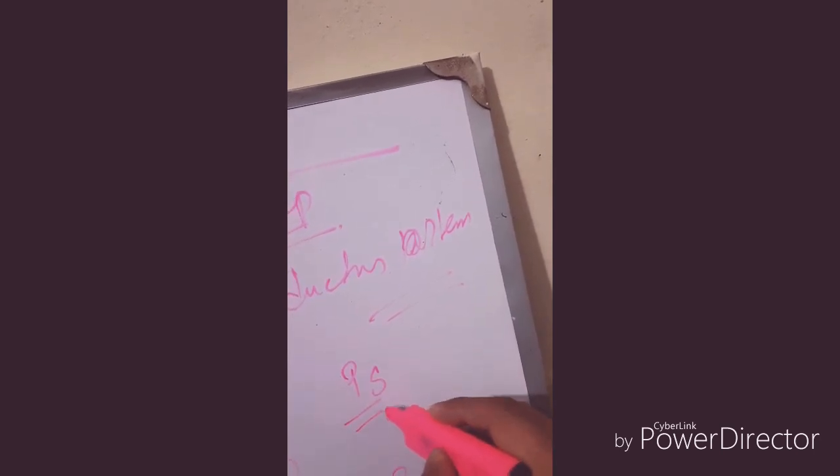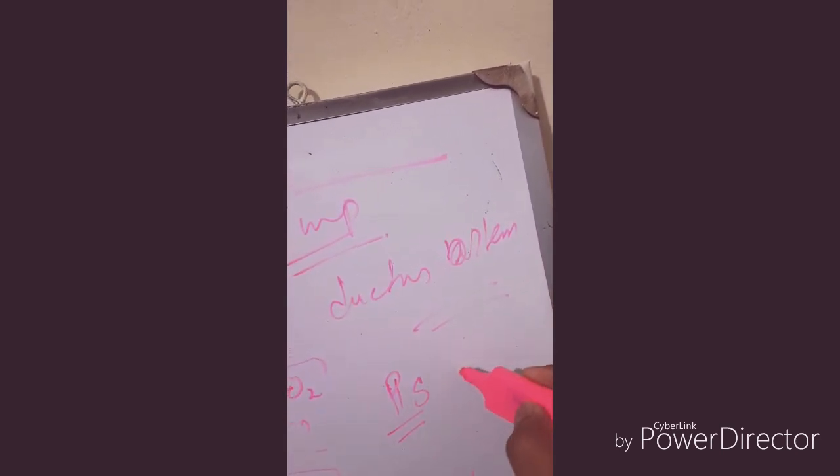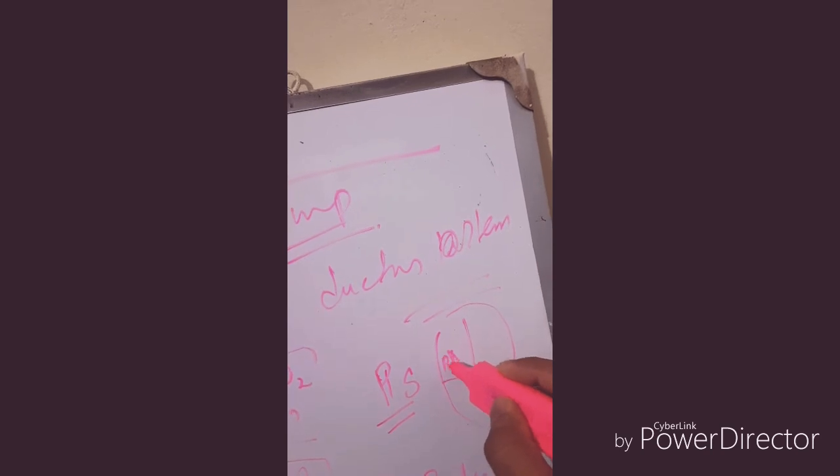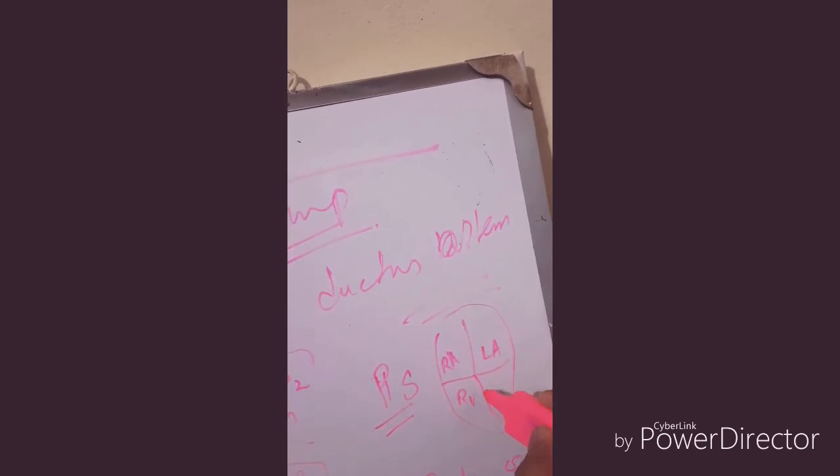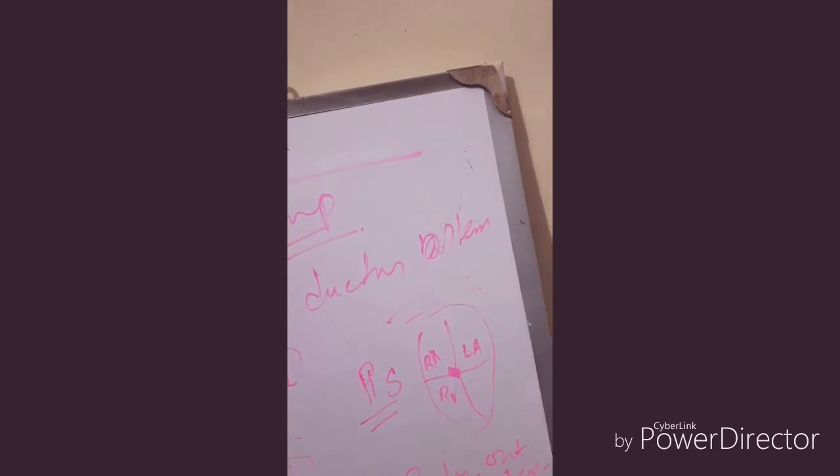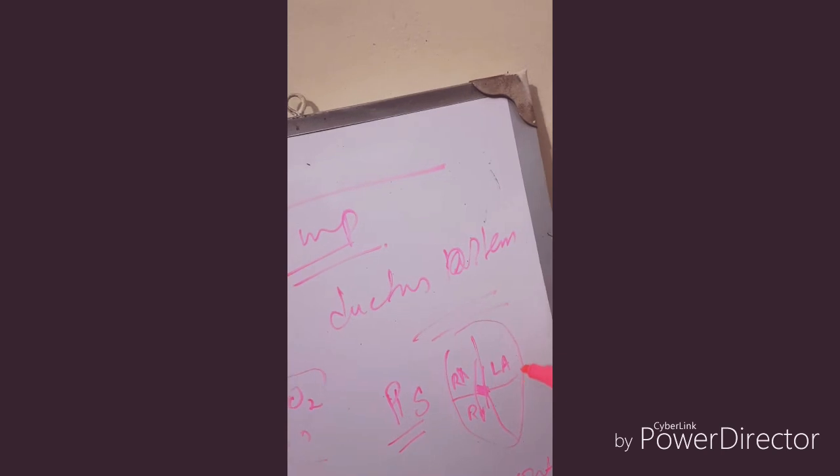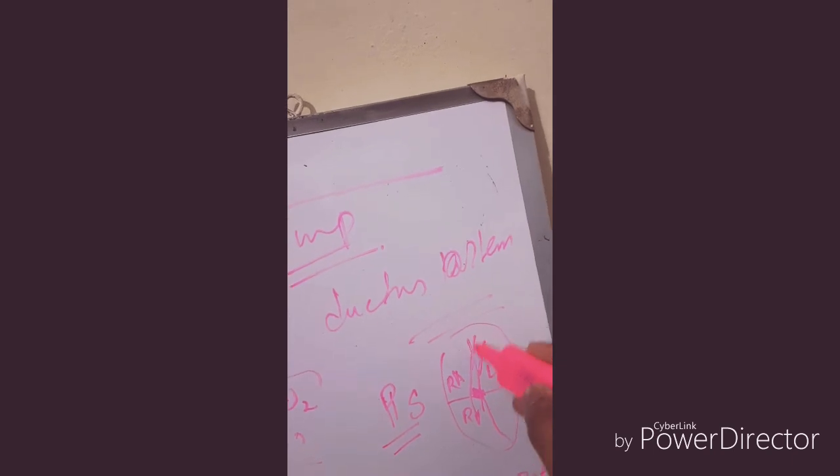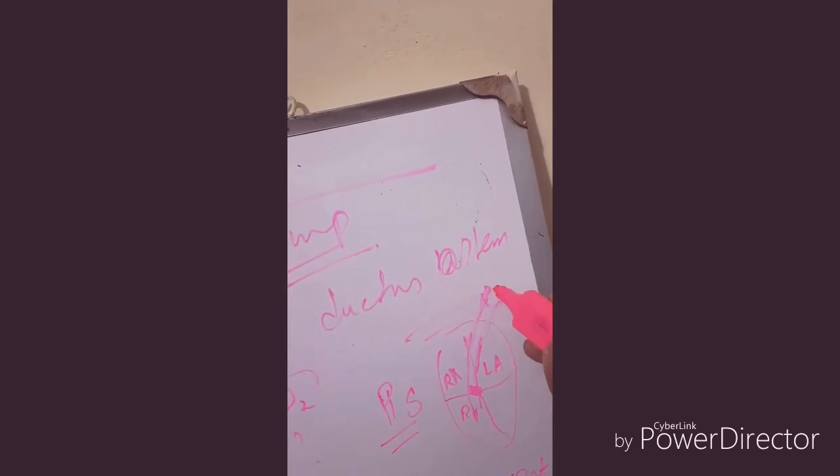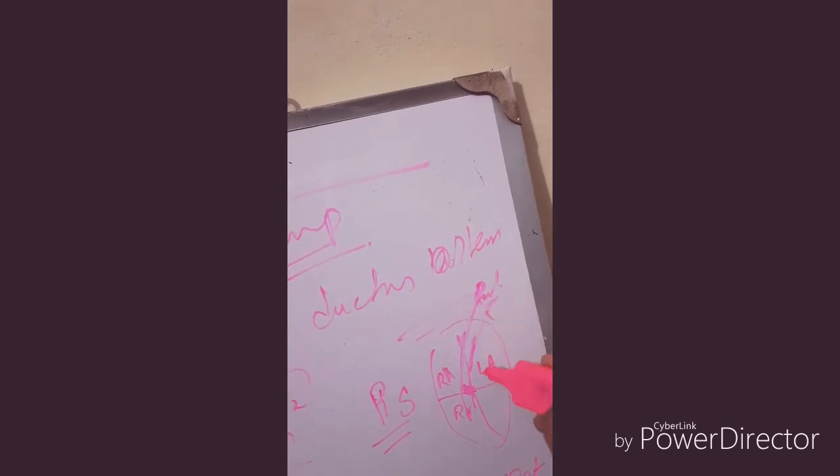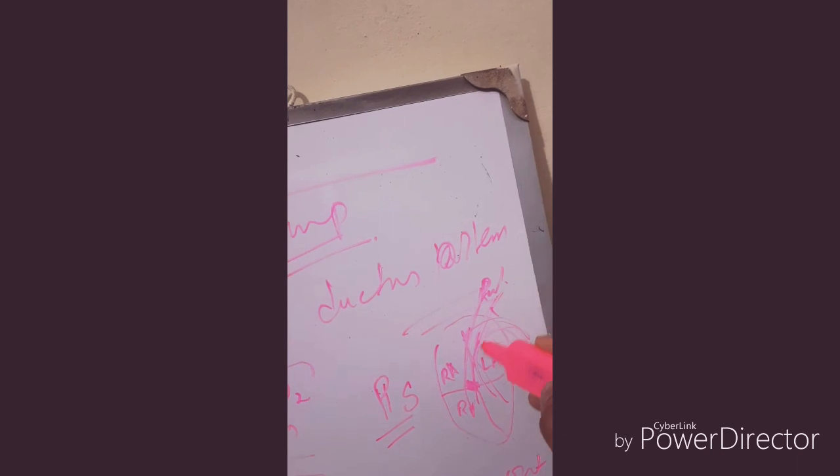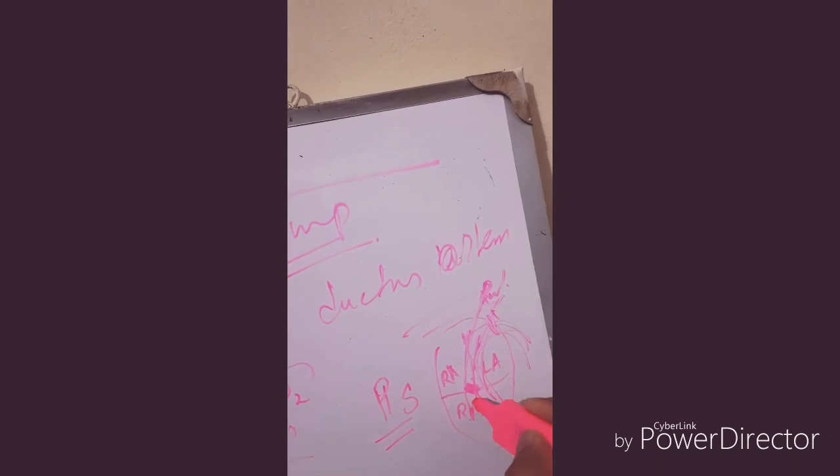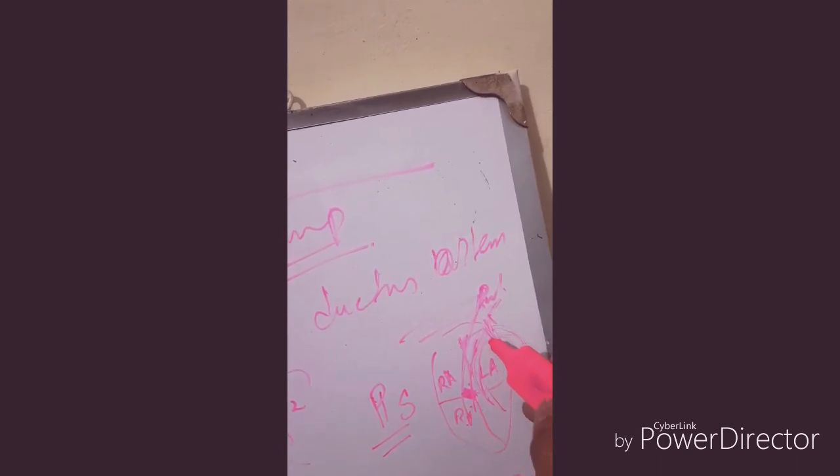In pulmonary stenosis, this is the heart: right atrium, left atrium, right ventricle, left ventricle. Here is pulmonary stenosis. What does ductus arteriosus do? It connects the pulmonary trunk to the aorta. Even if there is no flow from the right ventricle, the pulmonary circulation can get blood from the aorta and can oxygenate.